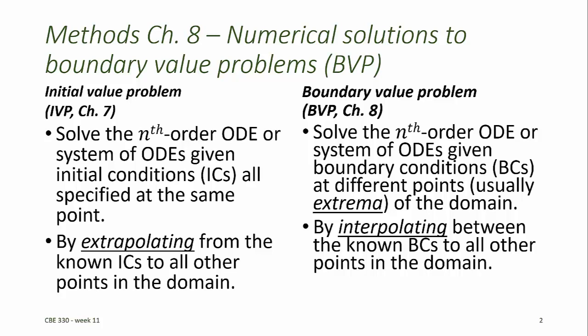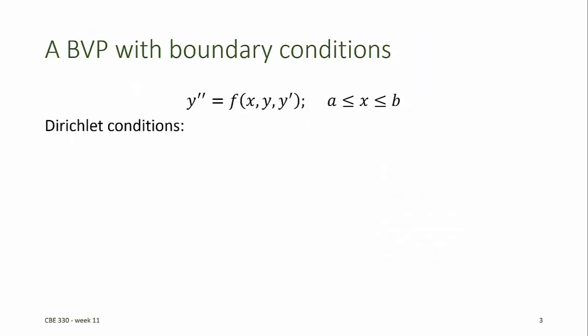So the difference between solving initial value problems and solving boundary value problems is that when solving initial value problems, we extrapolate from a known point, and when solving boundary value problems, we interpolate between known points.